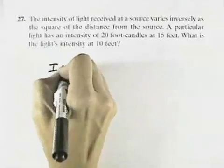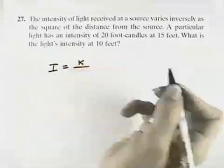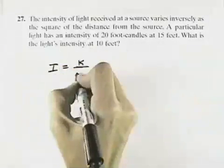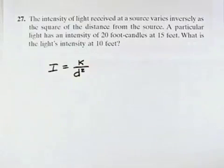The intensity of light varies inversely. That means the constant of variation divided by the square of the distance, the distance squared, from the source.